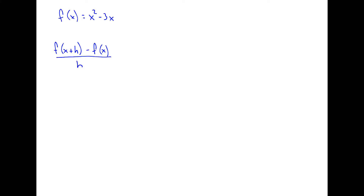For f of x plus h, wherever there's an x you're going to replace it with x plus h. So this x plus h replaces both x values. We get f of x plus h equals x plus h squared minus three times x plus h. Wherever there's an x, it represents x plus h. This whole expression is the f of x plus h part.